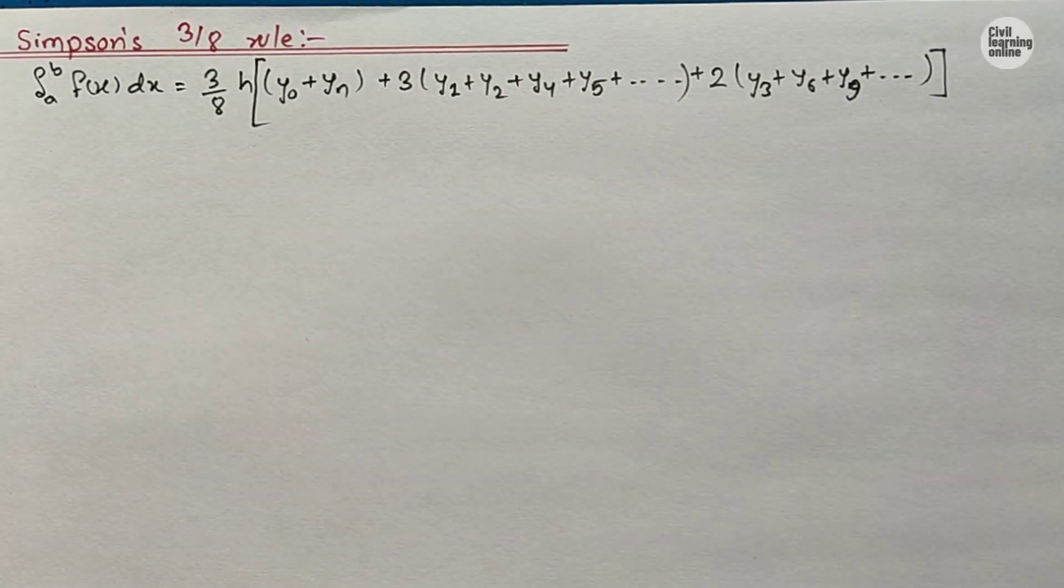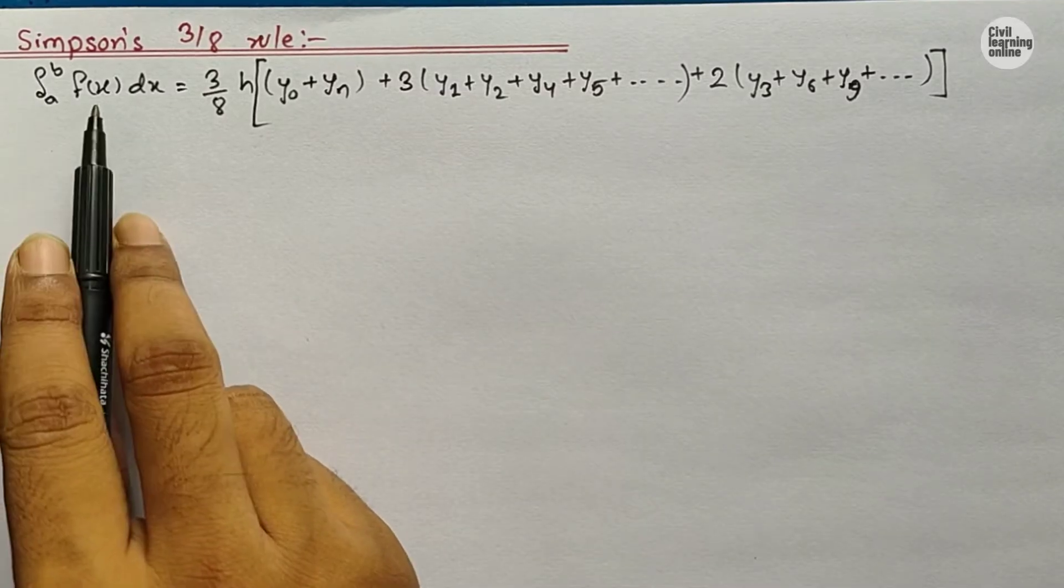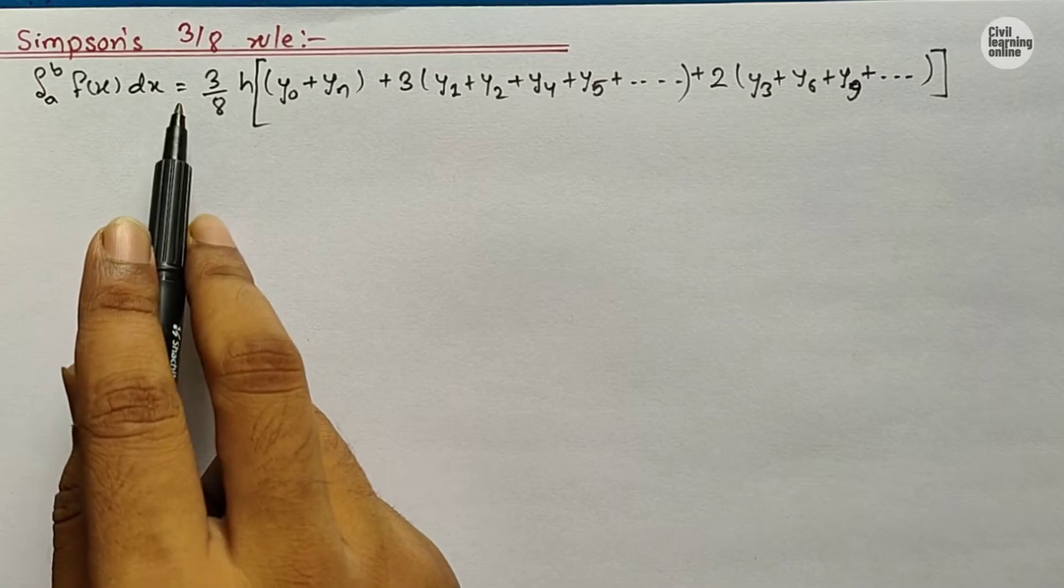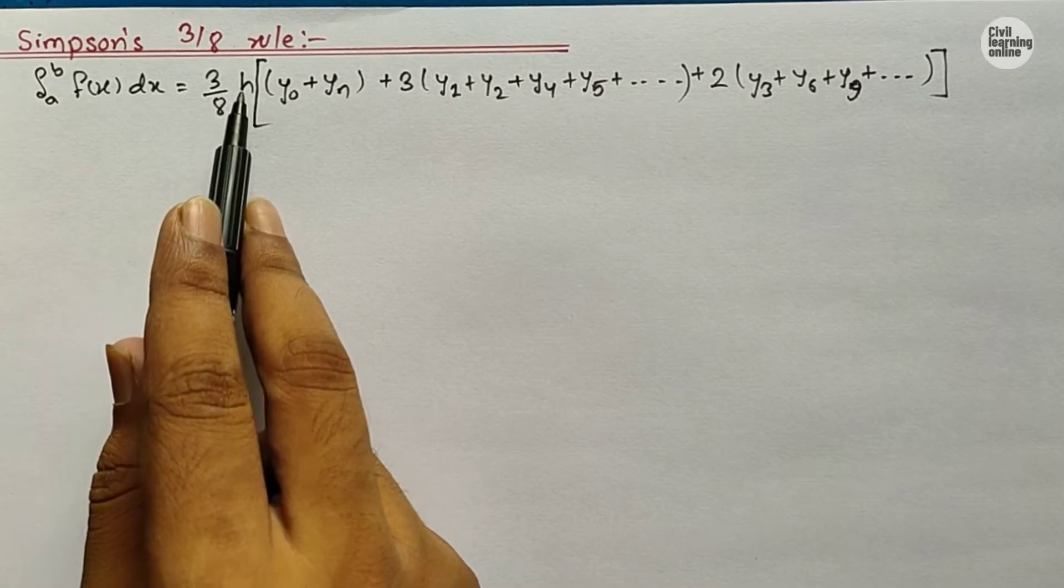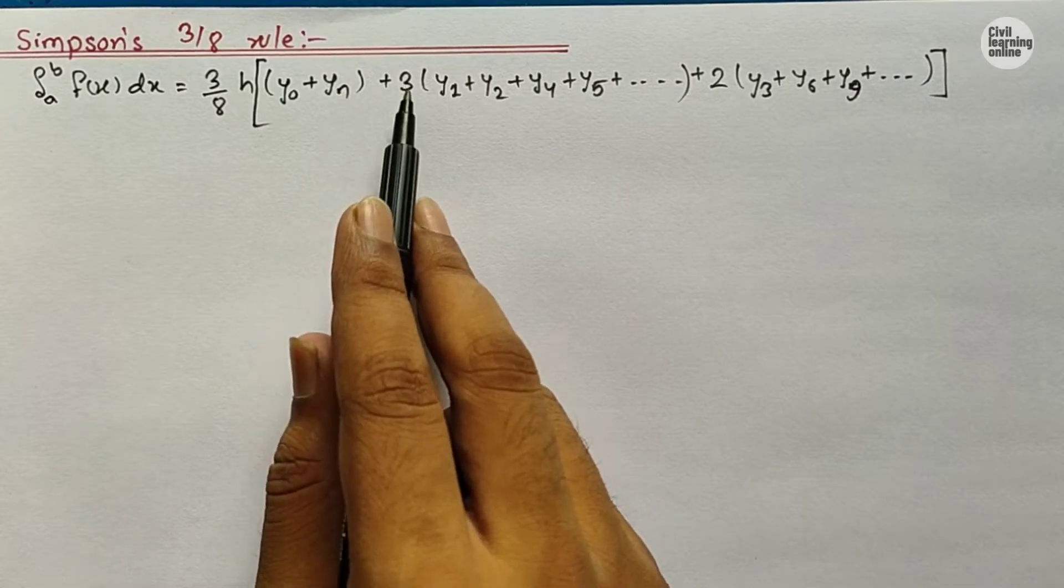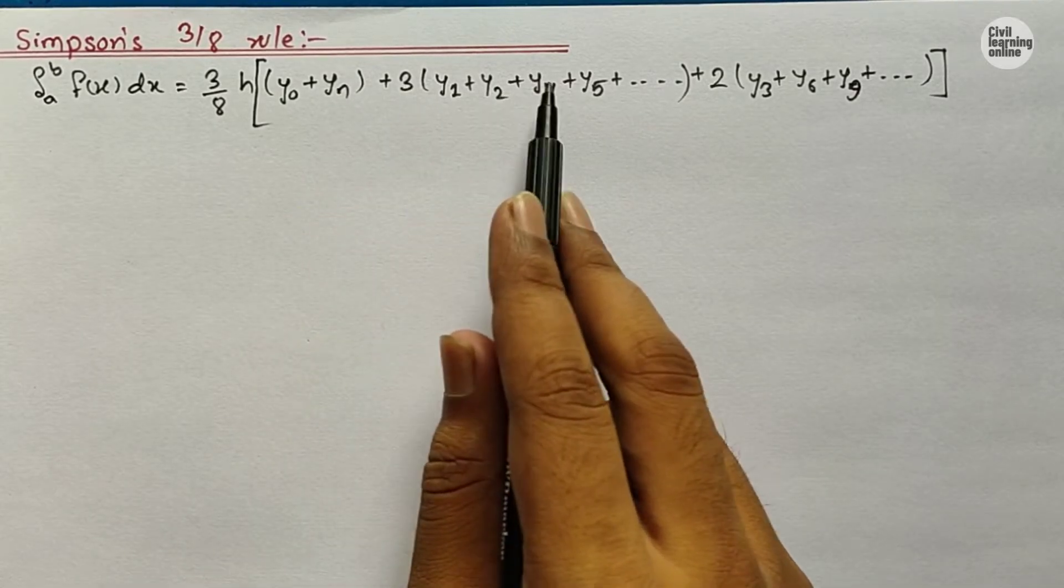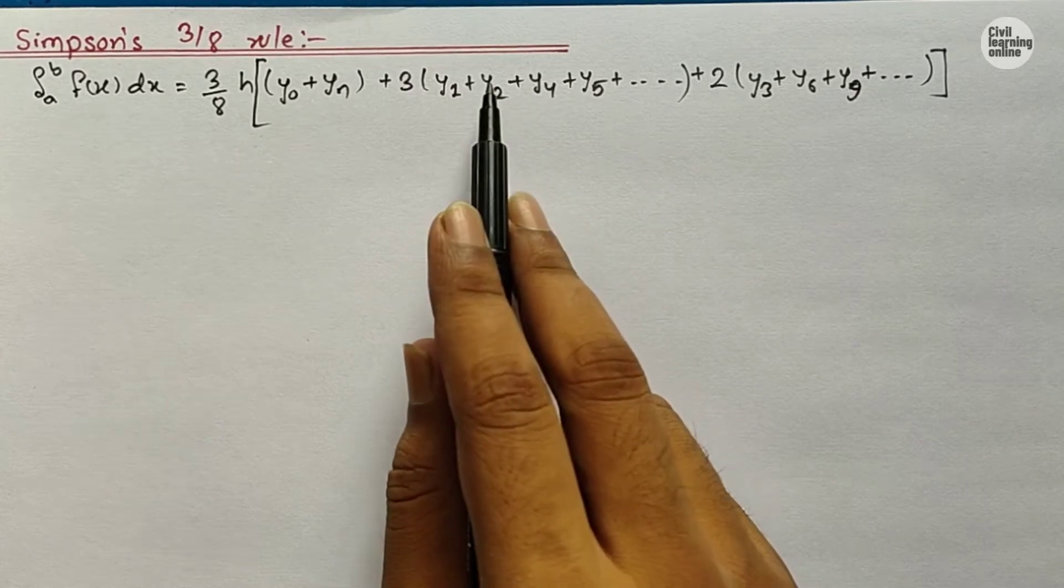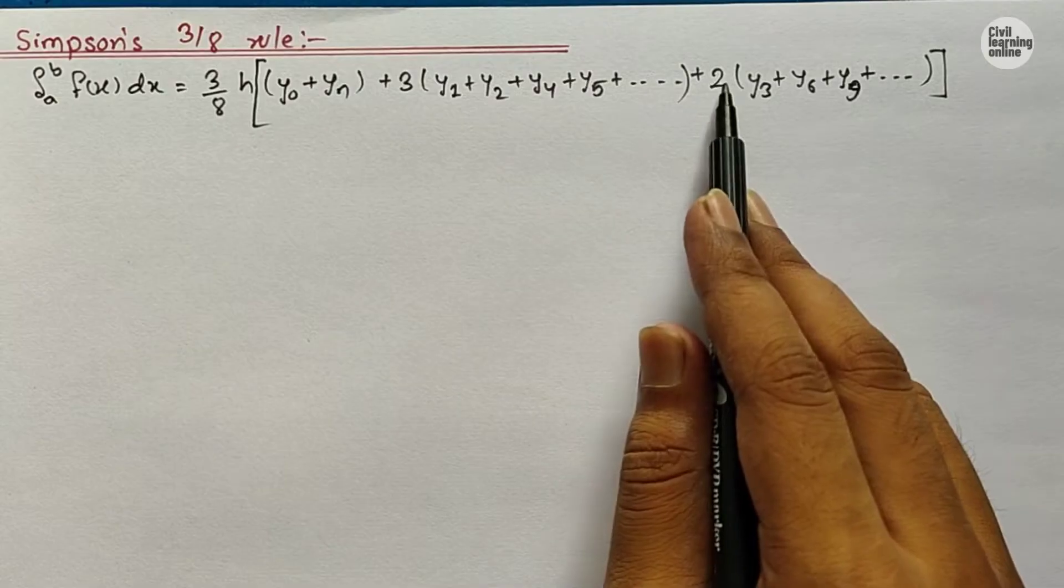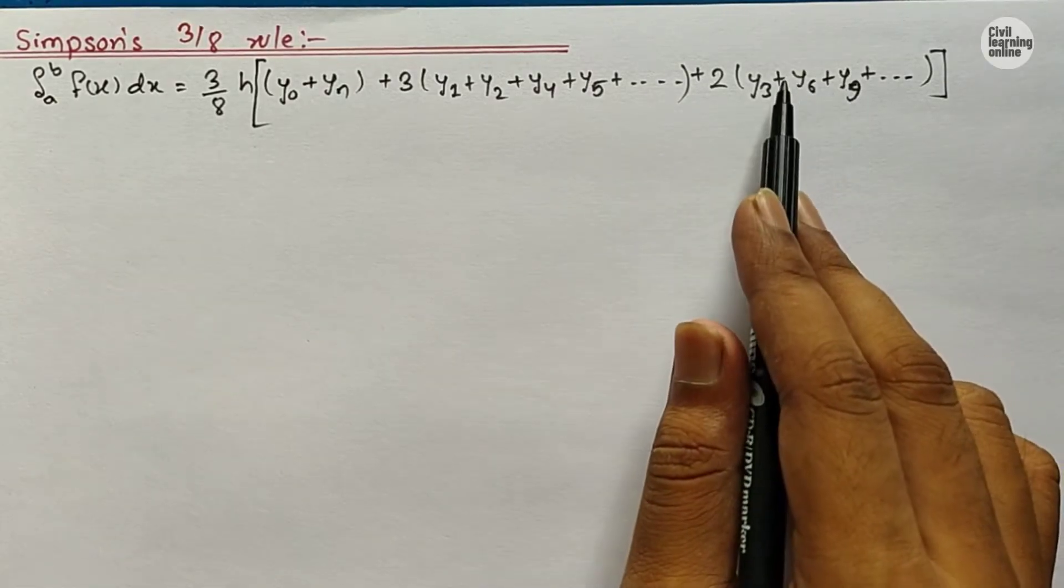So guys, moving toward the discussion on this rule. First of all, I would like to take you through the formula for this rule. It says that integration of f(x)dx from lower limit a to upper limit b will be equals to 3/8 times h, multiplied by y0 plus yn plus 3 times (y1 plus y2 plus y4 plus y5) - excluding all the terms which are multiples of 3 - plus 2 times all the numbers which are multiples of 3.